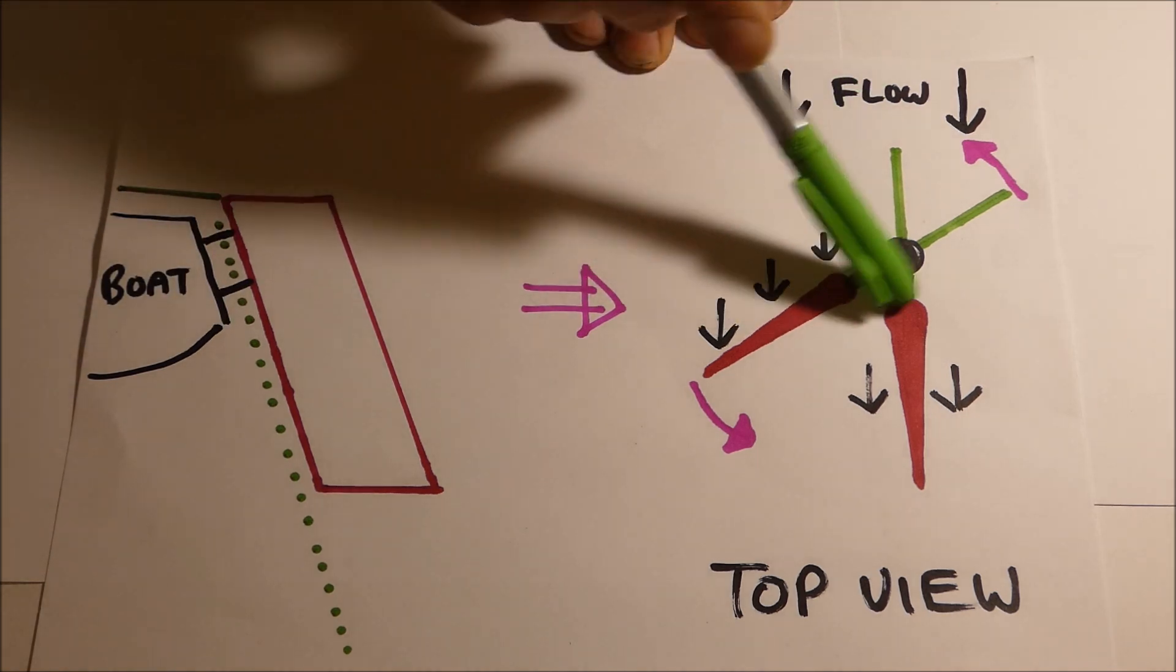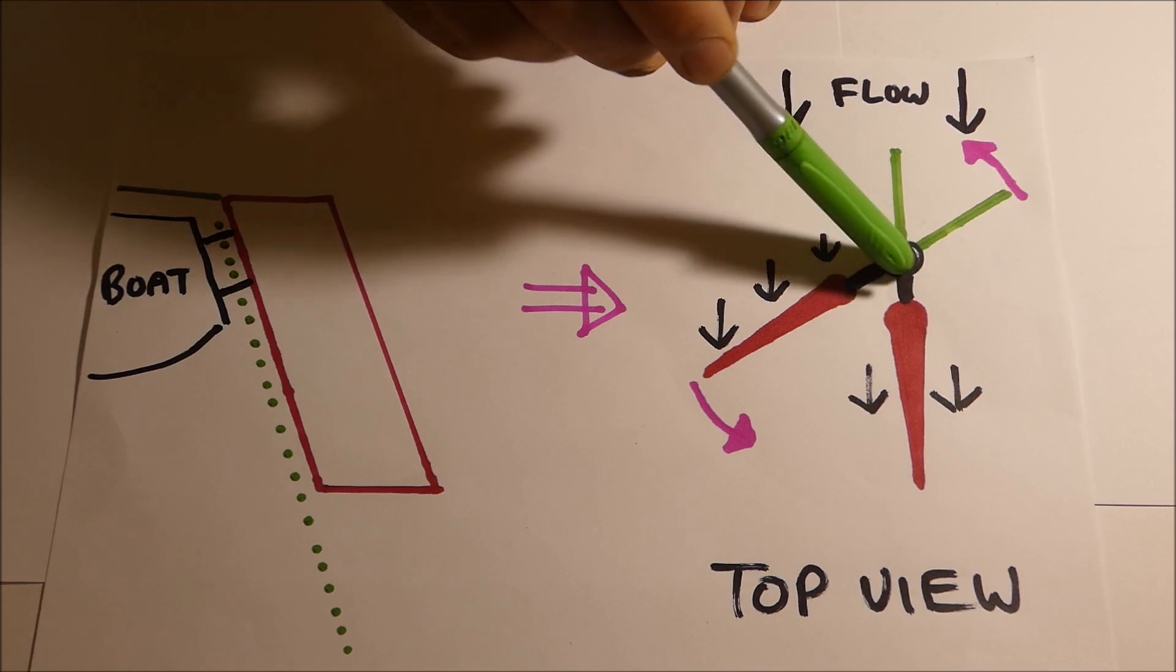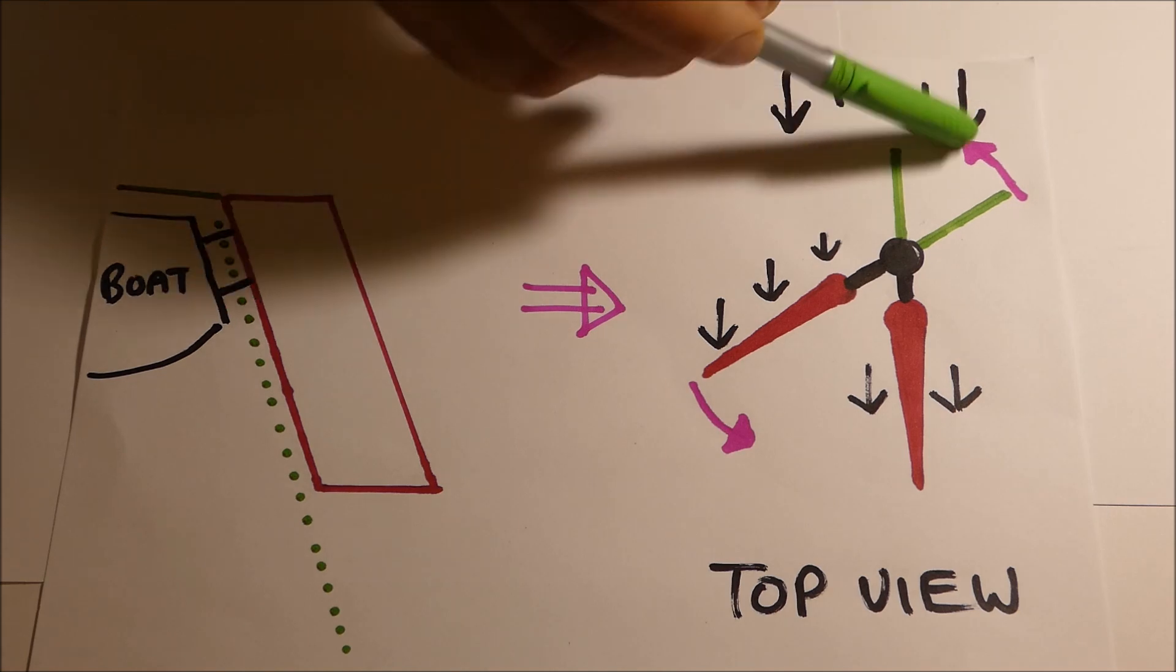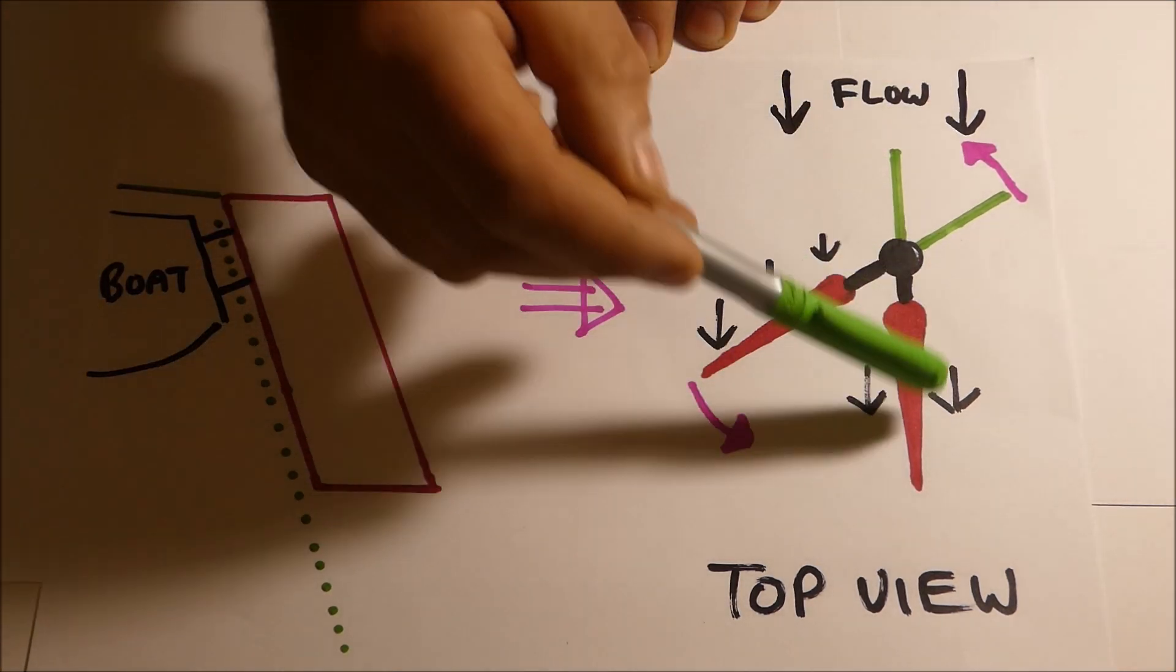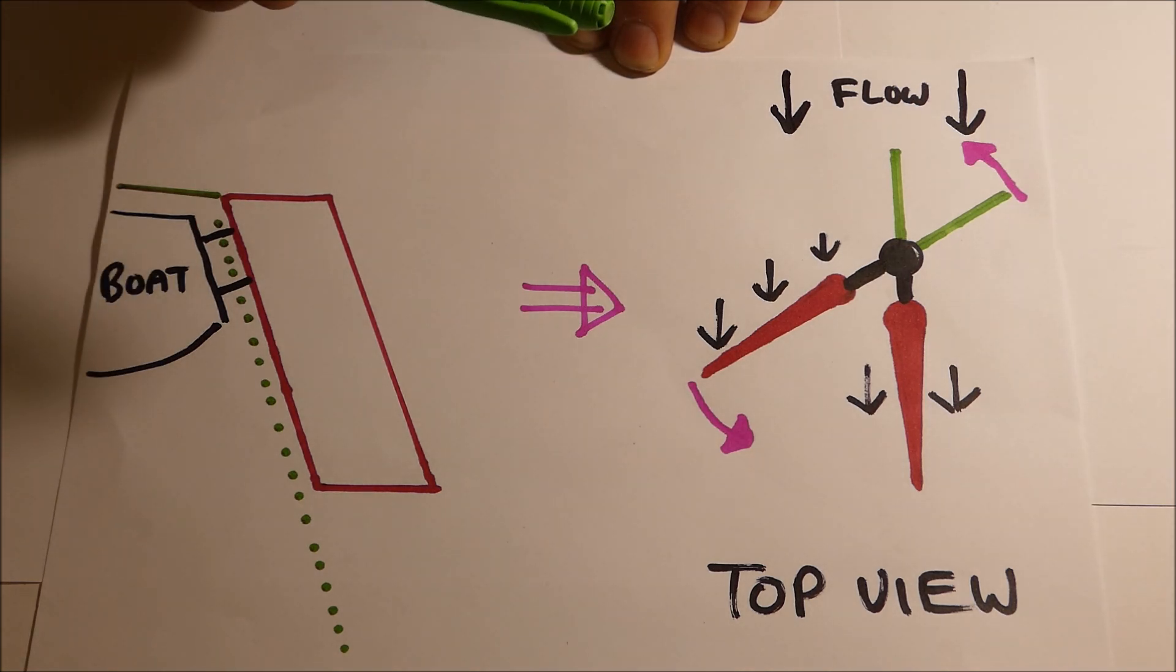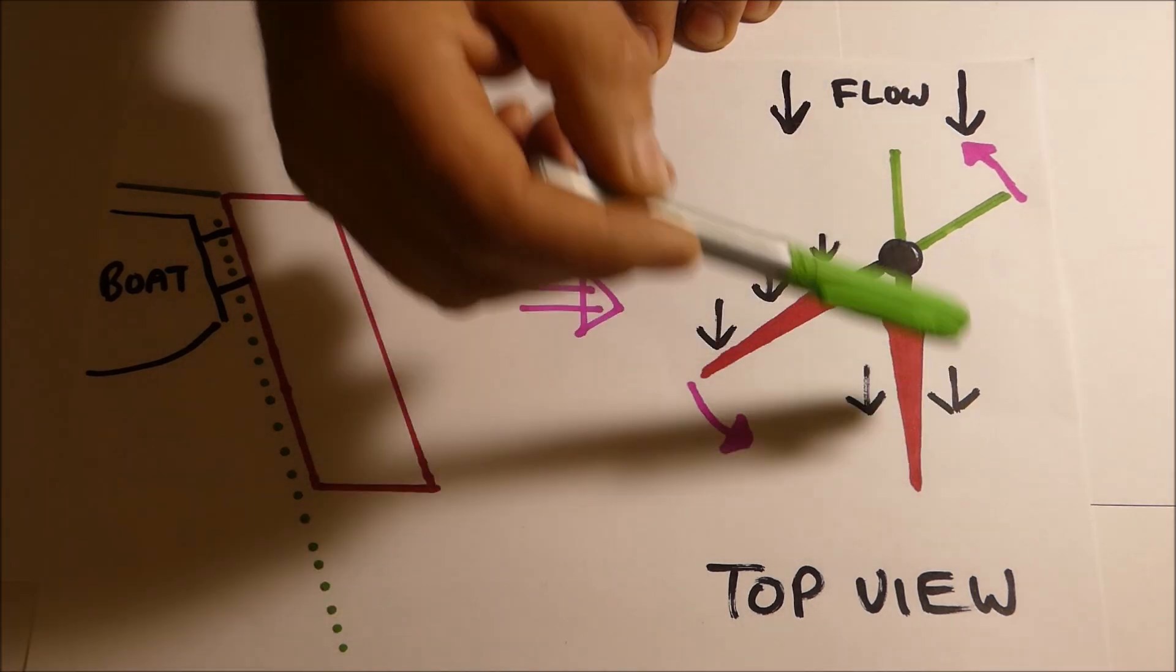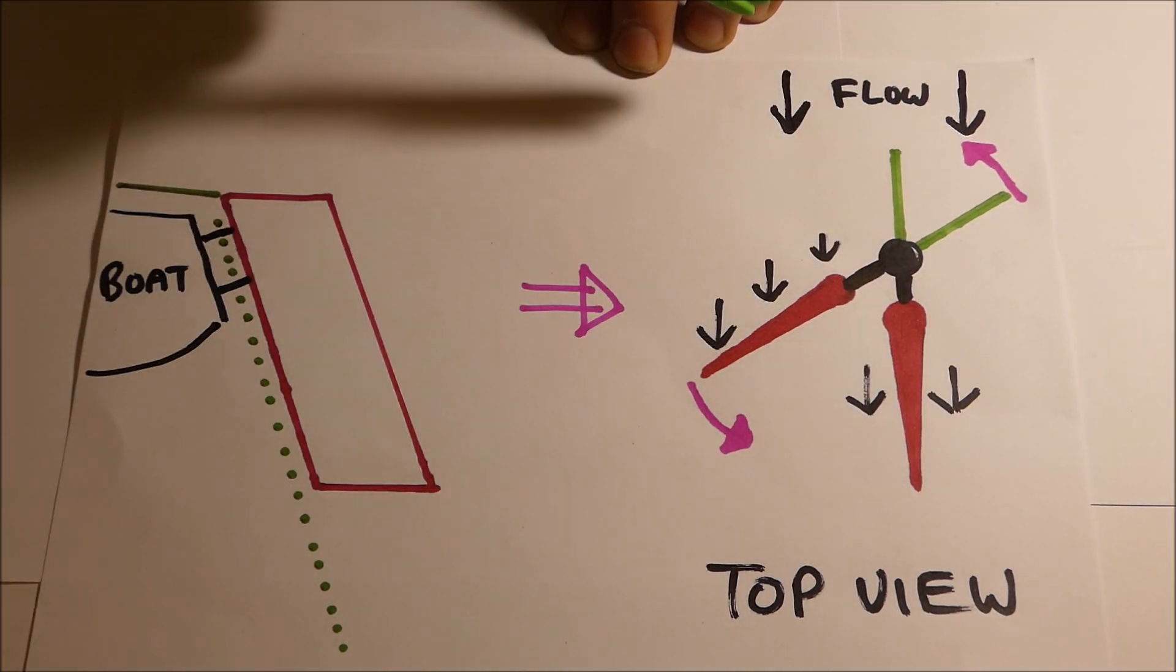So if we look over here at a top view, the black dot there represents the point of rotation of the pintles, the red represents the rudder blade and the black arrows here represent the water flow. Now in a straight ahead direction in a boat that has balanced sails and a balanced rig, there will be no pressure on the tiller handle at all.